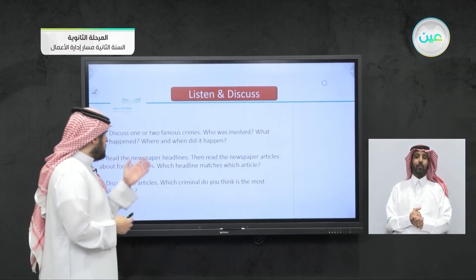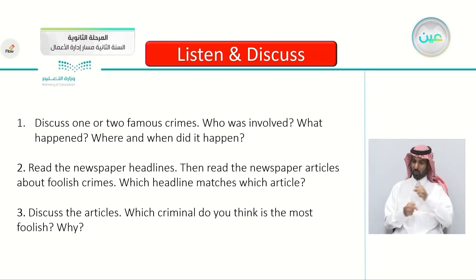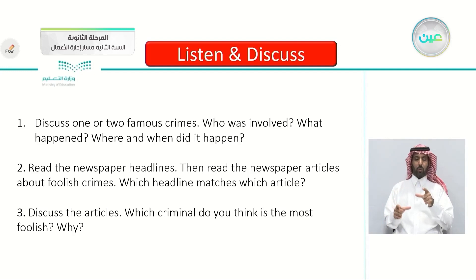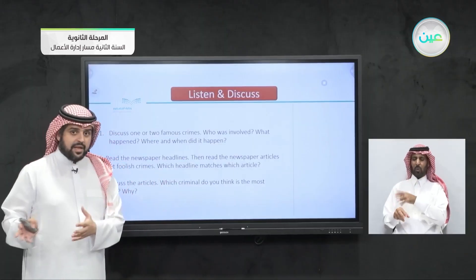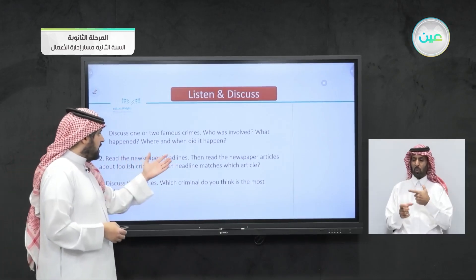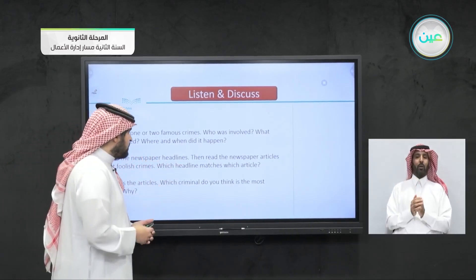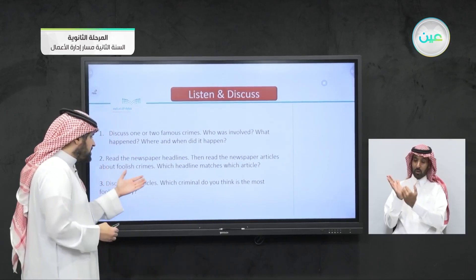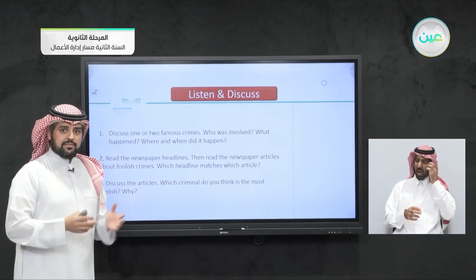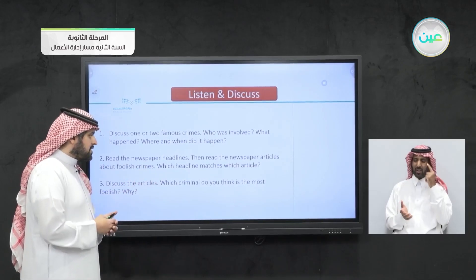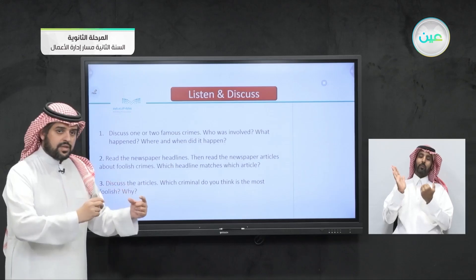Discuss one or two famous crimes. Who was involved? What happened? Where and when did it happen? Who are the parts of this crime — who is the victim, and who is the criminal? The next task: read the newspaper headlines, then read the newspaper articles about foolish crimes. The people who committed these crimes are foolish — stupid. Which headline matches which article? We'll be matching the headlines with the articles.